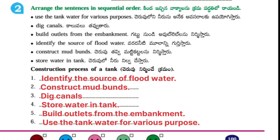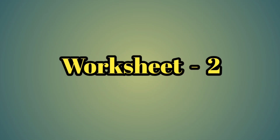Next: Construction Process of a Tank. Identify the source of flood water. Construct it. Mud burns. Dig canals. Store water in tank. Build outlets from the embankment. Use the tank water for various purposes.